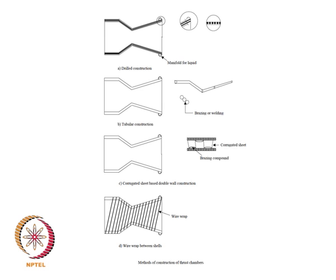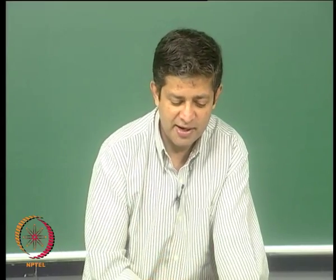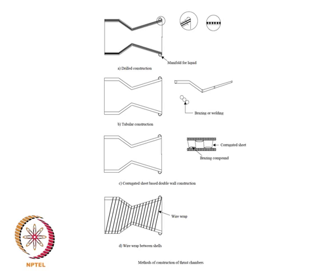There is also something known as wire wrap, which is scarcely used — you wrap wire around the nozzle so that the coolant moves along those lines. The trouble is that even if you wrap the wires, there will be some gap between them, leading to hot spot generation. It is not a good design because you cannot cover the entire region with this arrangement.